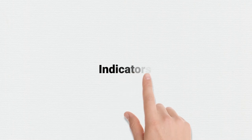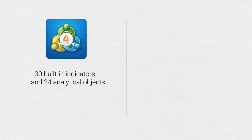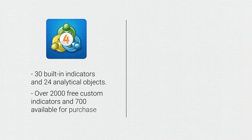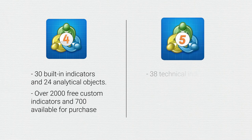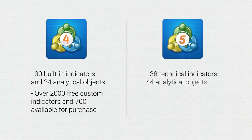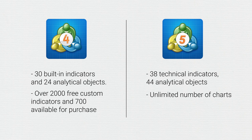Then we have indicators. MetaTrader 4 offers 30 built-in indicators and 24 analytical objects. Also, there are over 2,000 free custom indicators and 700 available for purchase. In contrast, MetaTrader 5 has 38 technical indicators, 44 analytical objects, and offers an unlimited number of charts. MT4 has a limit of 128 charts.